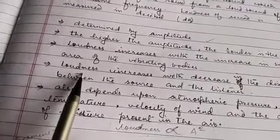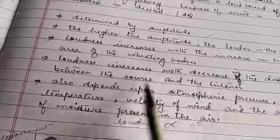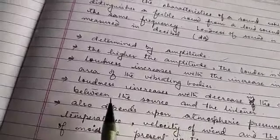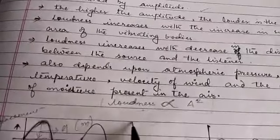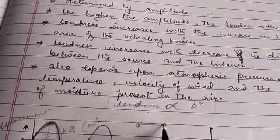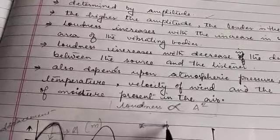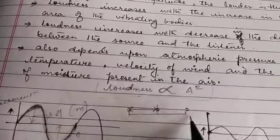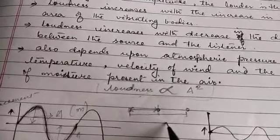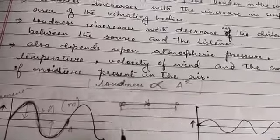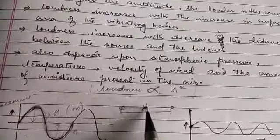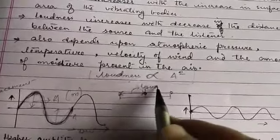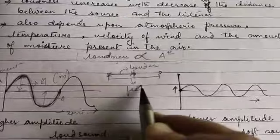Loudness also increases with decrease in the distance between the source and the listener. A person standing closer to the source can hear a louder sound than a person standing at a greater distance. The greater the distance, the more feeble will be the sound heard. If the distance between source and listener is less, the sound heard will be louder.